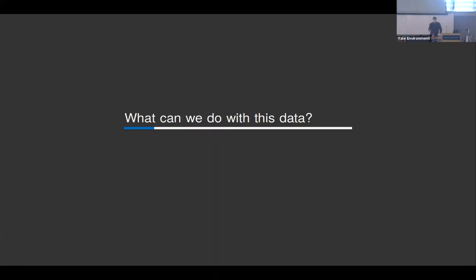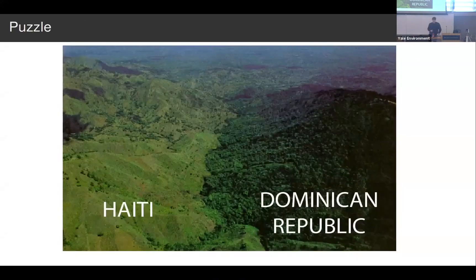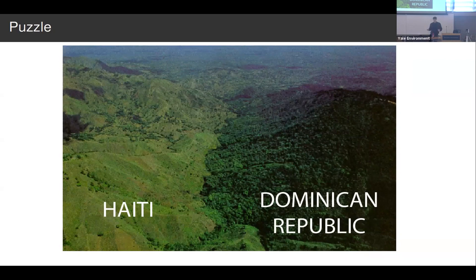So what are the kinds of things we can do with this data? I'll give you one example: electoral deforestation cycles. This is driven by a question I had at the beginning of graduate school where I found that if you looked at satellite images of the Earth, you can see political boundaries even without the political boundary lines on the map. If you remove the country data layer, you can still see some of these boundaries. What's going on? How come the trees follow the political boundaries?